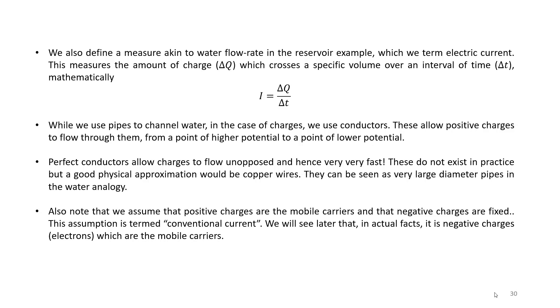We will see later in the course why this assumption allows us to create a valid model and how things would work if we use the physical current flow instead. The ideal type of conductors, which we call perfect conductors, allow charges to flow unopposed and hence very very fast. They can be seen as very large diameter pipes in the water analogy, and they will let any amount of charge flow through them almost instantly.